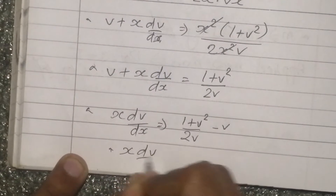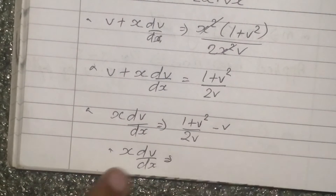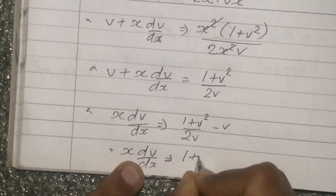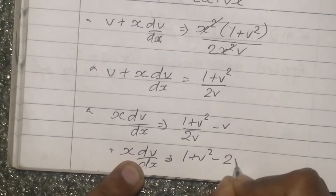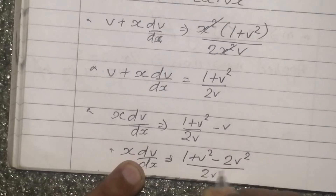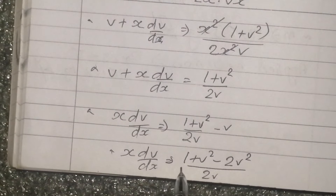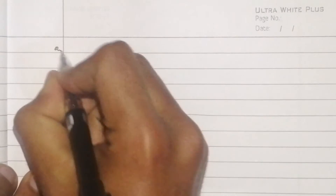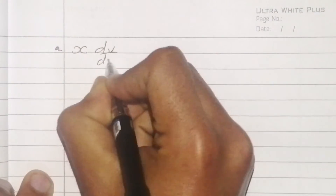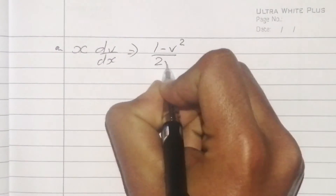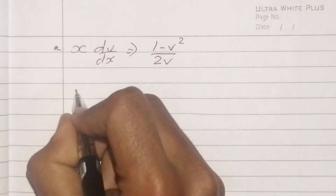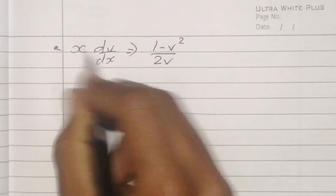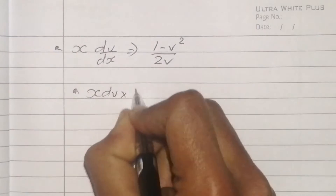Separating variables: x dv/dx is equal to (1 + v²)/(2v) minus v, which simplifies to (1 - v²)/(2v). So x dv/dx equals (1 - v²) upon 2v. Rearranging: 2v dv divided by (1 - v²) equals dx/x.